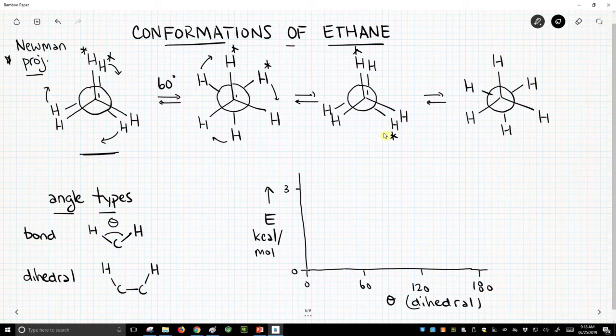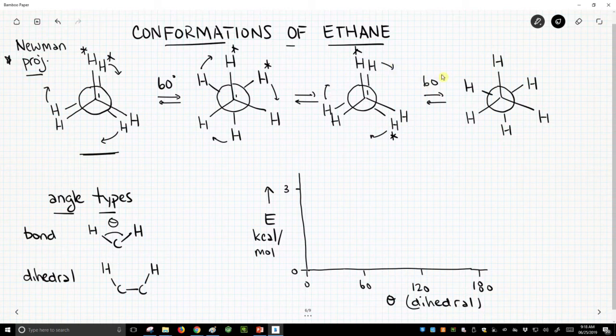And if we keep doing this process, let's rotate some more, another 60 degrees. Let's fill these in 60 degrees. Then we finally get to here. So we've now created, or accounted for, four different Newman projections.